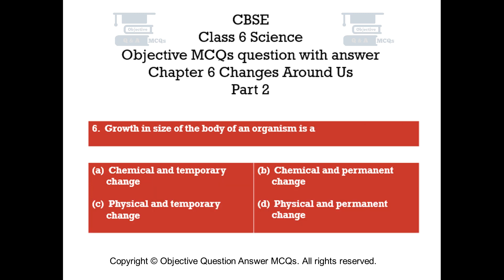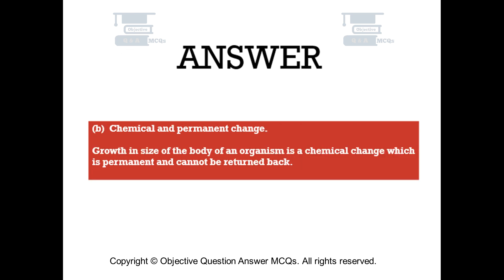Question number 6. Growth in size of the body of an organism is a — Option A: chemical and temporary change. Option B: chemical and permanent change. Option C: physical and temporary change. Option D: physical and permanent change. The right answer is Option B: chemical and permanent change. Growth in size of the body of an organism is a chemical change, which is permanent and cannot be returned back.